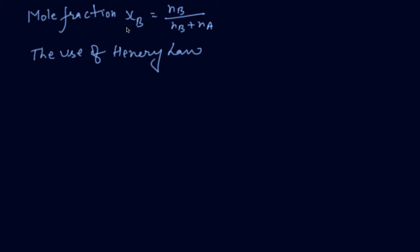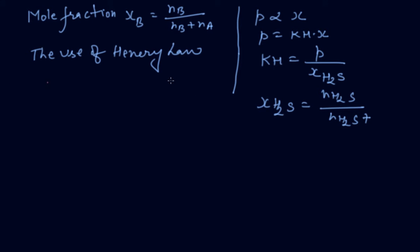Mole fraction is calculated as xB = nB/(nB + nA). When we have P = KH × x for any gas like H2S, and only H2S is given, you have to find x H2S = n H2S/(n H2S + other component). If any component is not given, you take the other component as water.